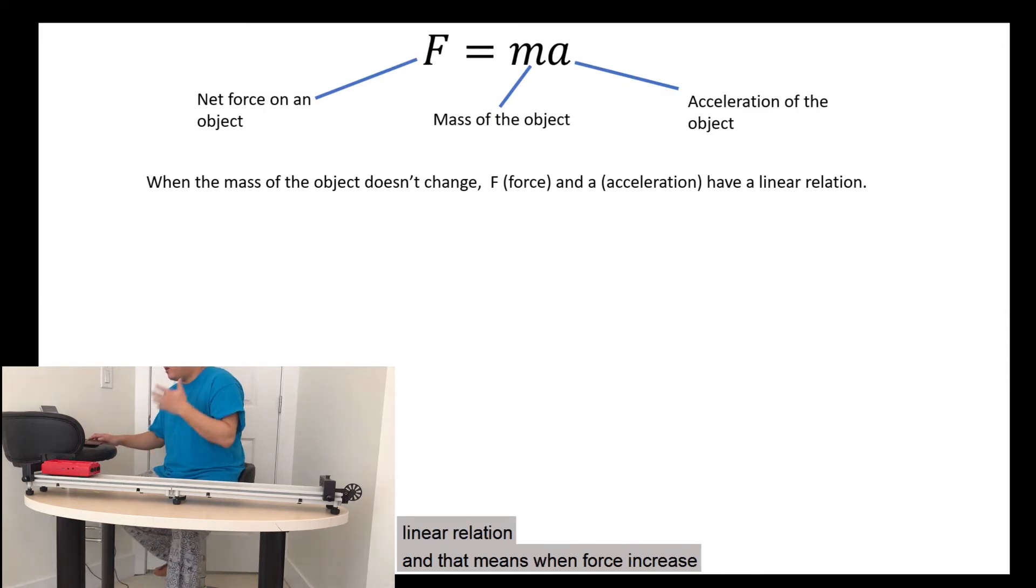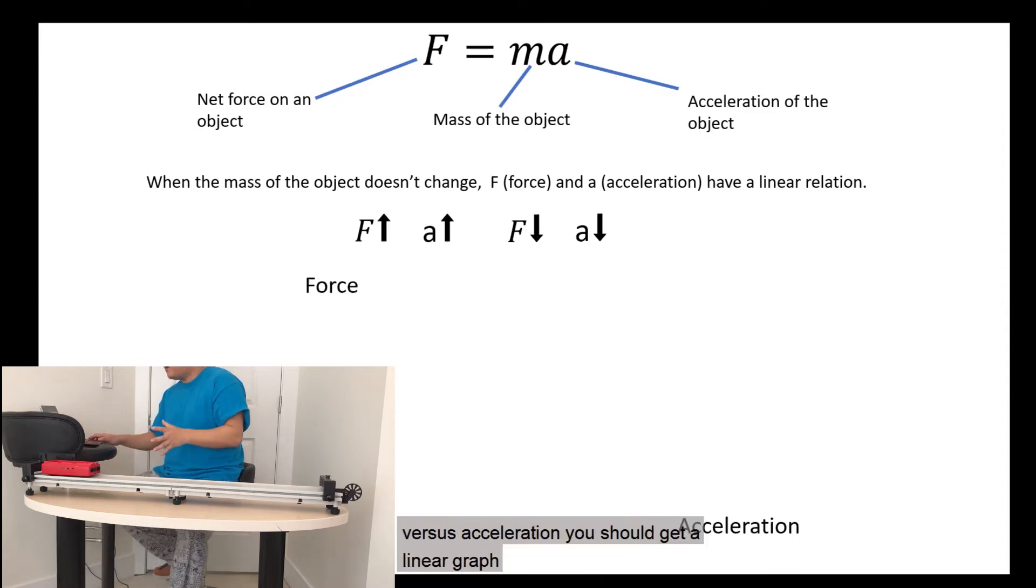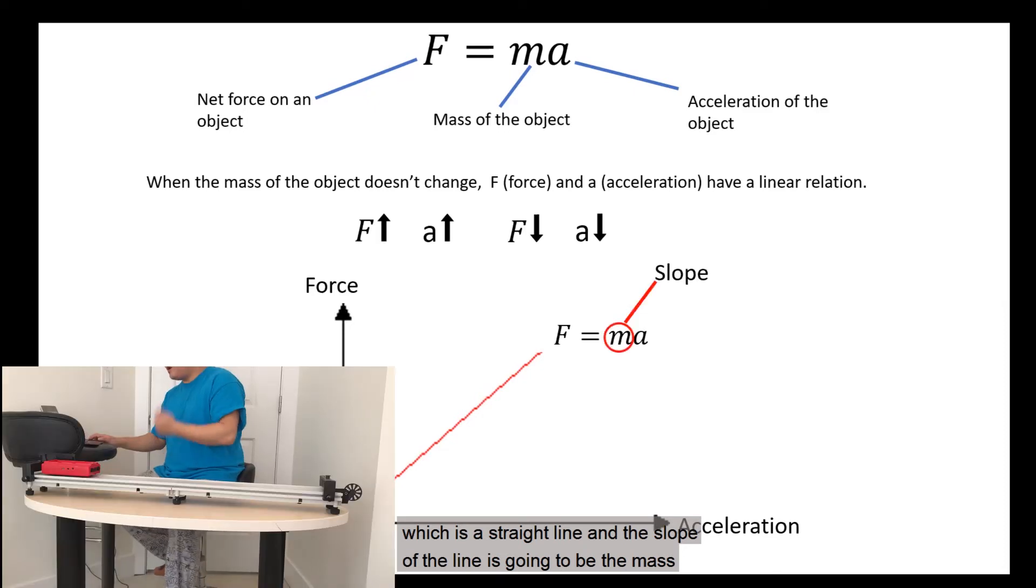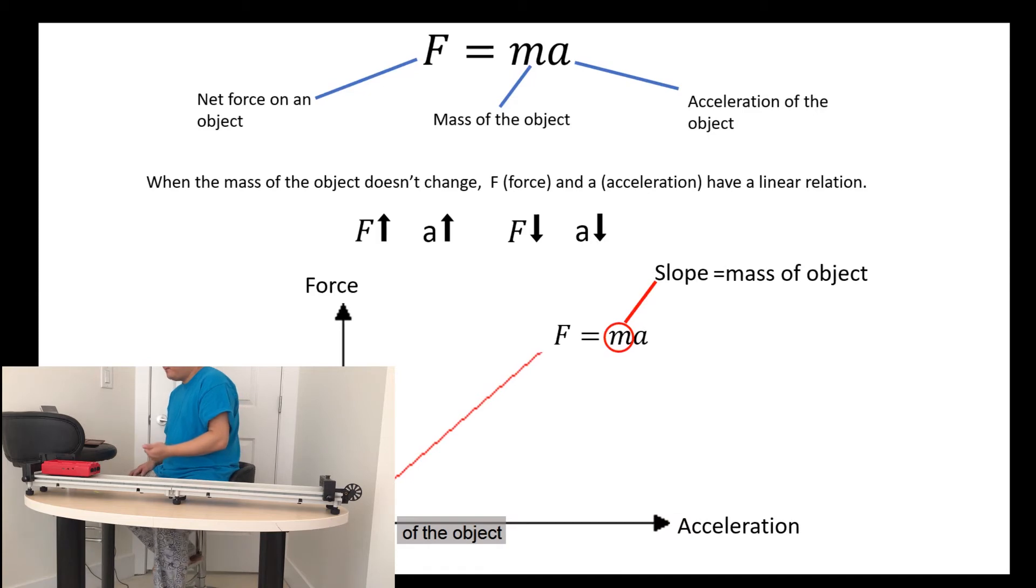And that means when force increases, acceleration will increase. And when force decreases, acceleration will decrease. And if you graph force versus acceleration, you should get a linear graph, which is a straight line. And the slope of the line is going to be the mass of the object. So let's see if we can use the smart cart to demonstrate this.